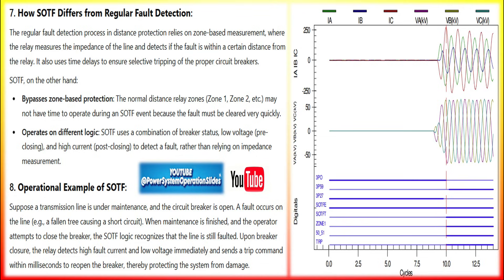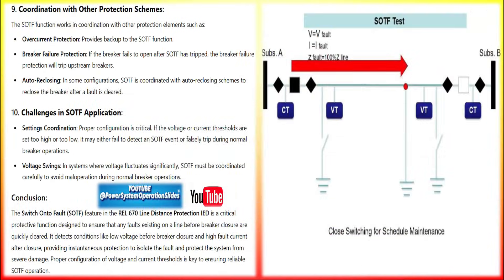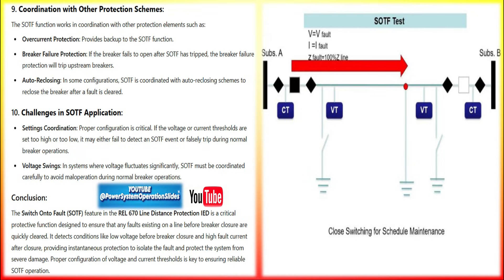The SOTF function typically activates under these conditions: first, breaker closing onto a fault — when the breaker closes onto a fault, there will be a sudden increase in fault current. Second, detection of low pre-fault voltage — before the breaker closes, the voltage across the line is usually low, near zero if there is a fault. The relay monitors the line voltage and senses that there is no healthy voltage present before closing. Third, high fault current on closing — as soon as the breaker closes, if the current rises sharply, indicative of a fault, the SOTF function is triggered.